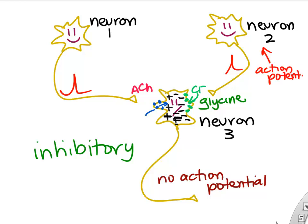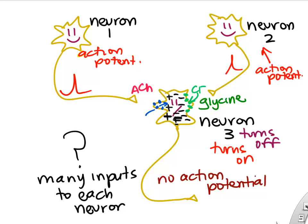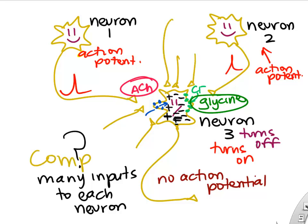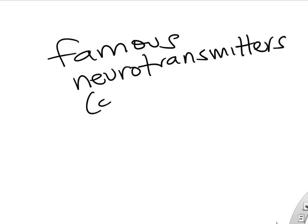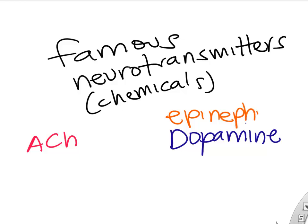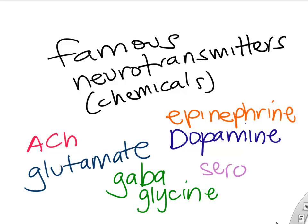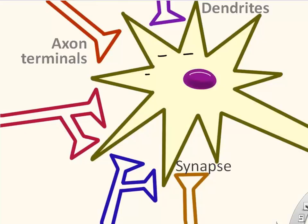With multiple inputs to every single neuron, some exciting and some inhibiting the same neuron, it's really an additive effect — whichever wins out, excitatory or inhibitory signals. Famous neurotransmitters include acetylcholine, dopamine, epinephrine, GABA, glycine, glutamate, and serotonin — all brain and spinal cord chemicals that signal in our nervous system.